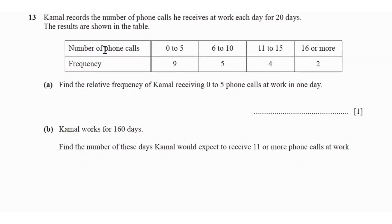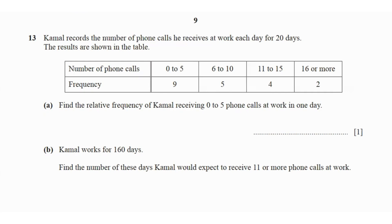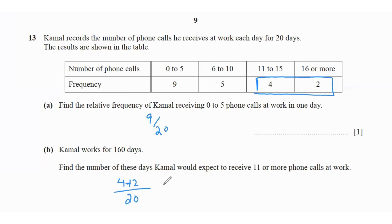Question 13: Kamal records phone calls over 20 days. Find the relative frequency of receiving 0 to 5 calls: that's 9 over 20, since he received 0–5 calls for 9 of the 20 days. If he works 160 days, the expected number of days with 11 or more calls: (4 + 2)/20 × 160 = 6/20 × 160 = 48 days.